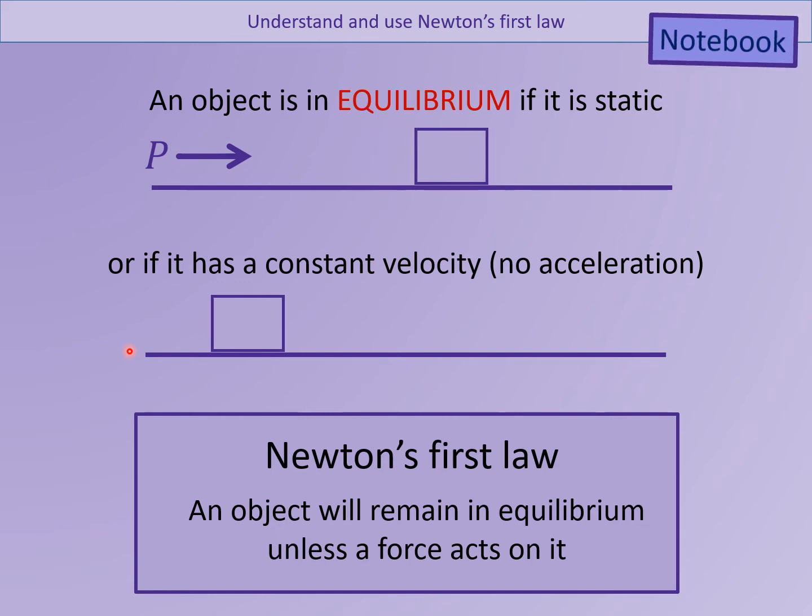If the first object is acted upon by a force, it will then accelerate. In this case, we see that the object started with a constant velocity. However, when a force acted on it, it then changed its velocity and ended up travelling in the opposite direction.